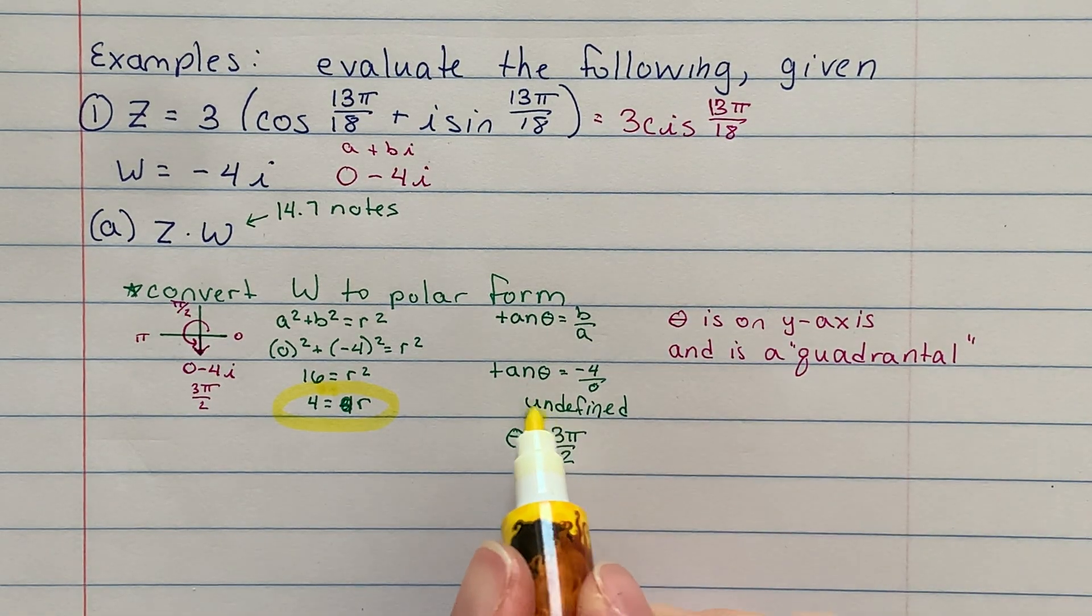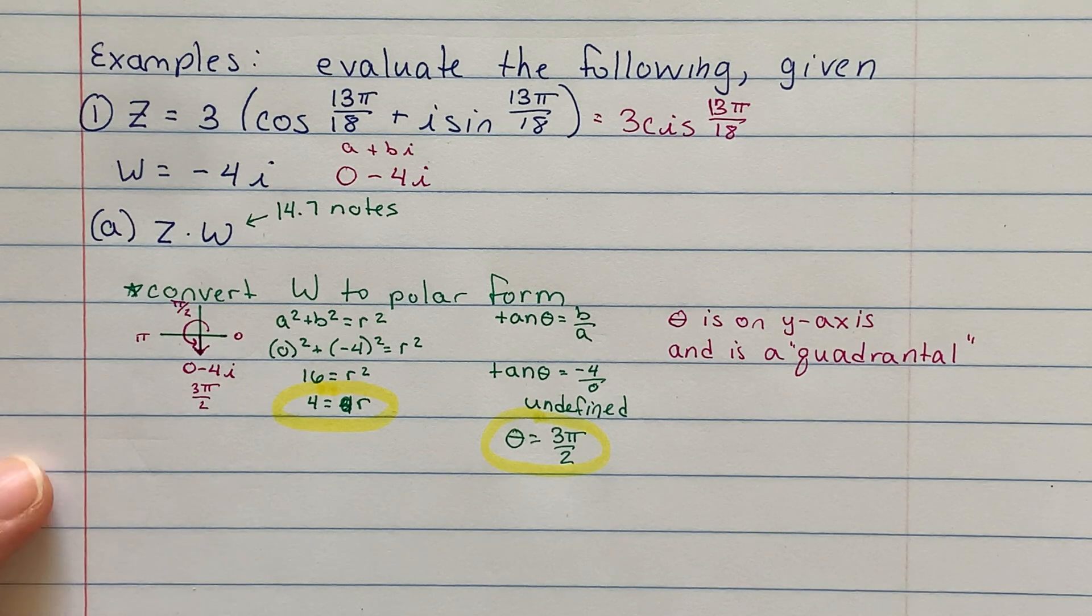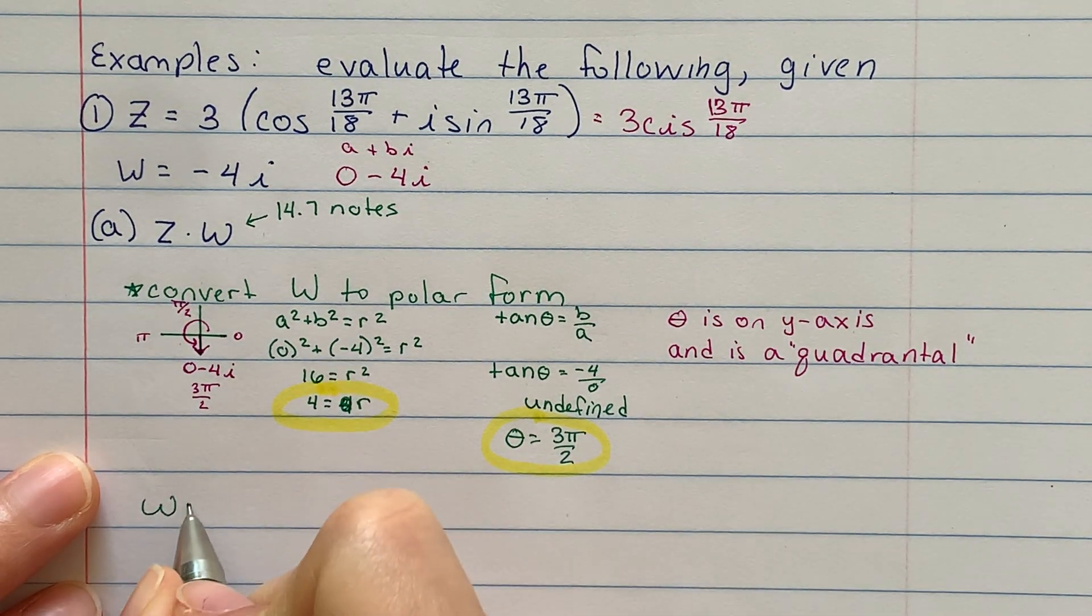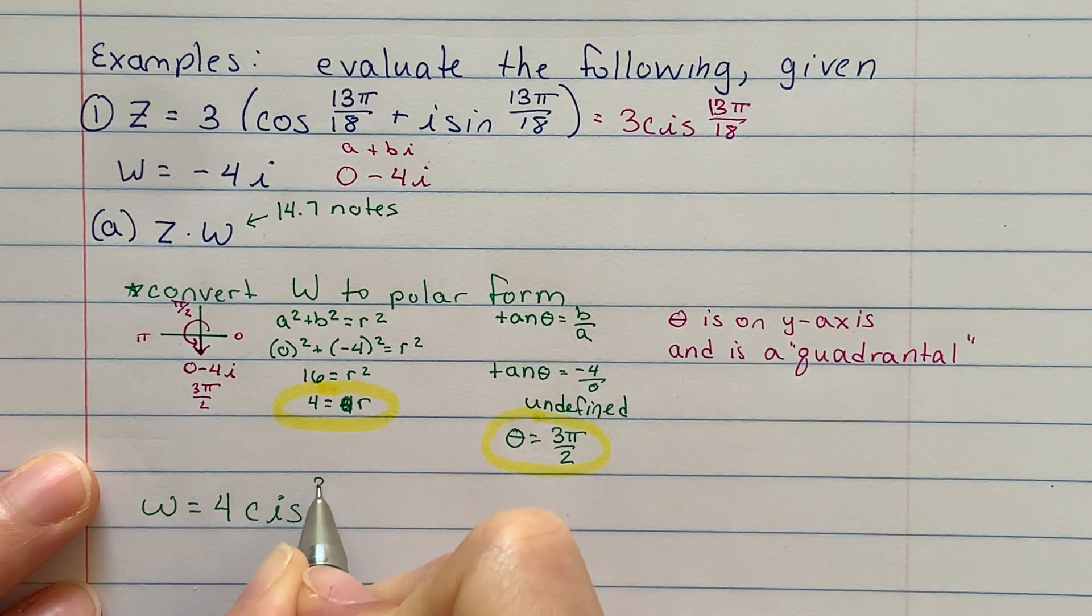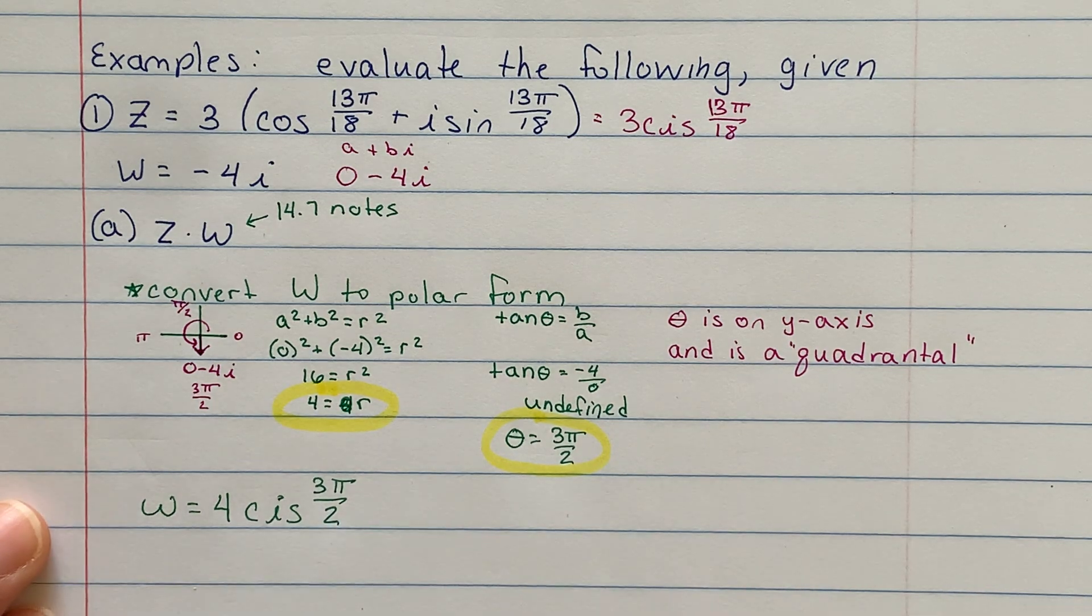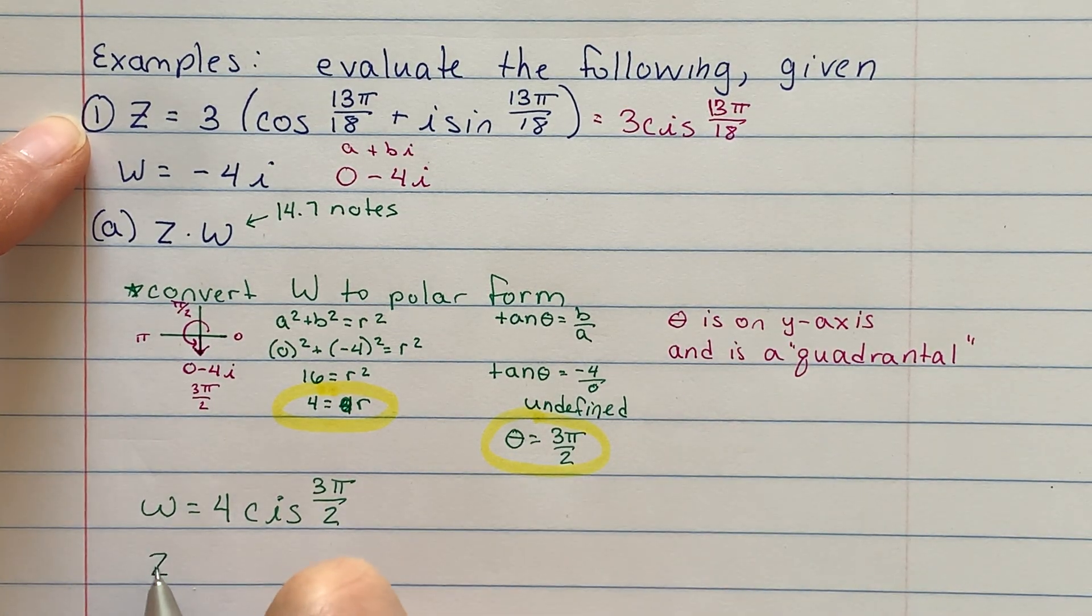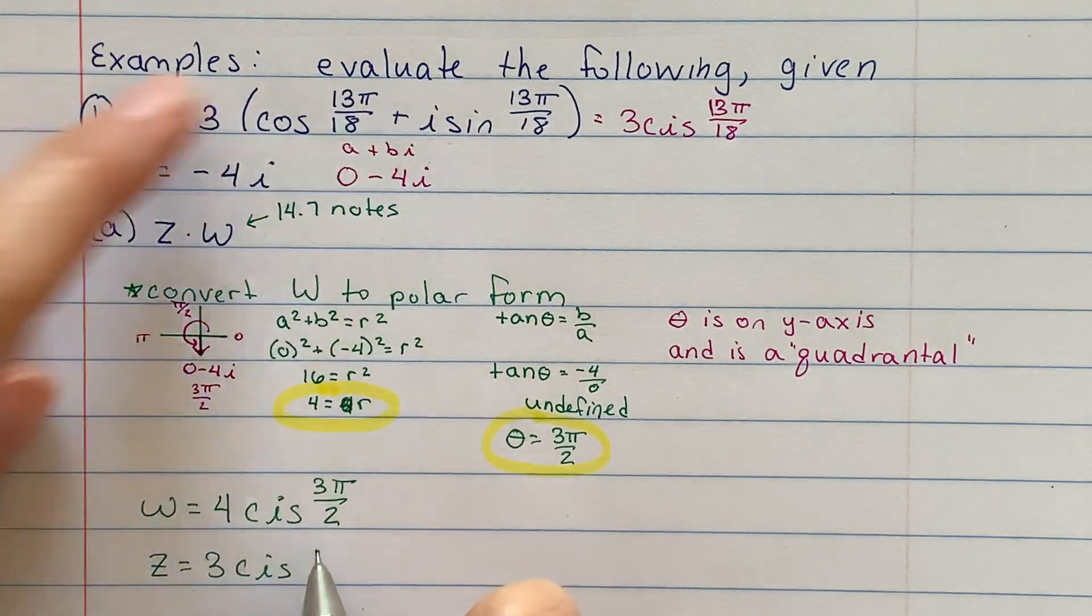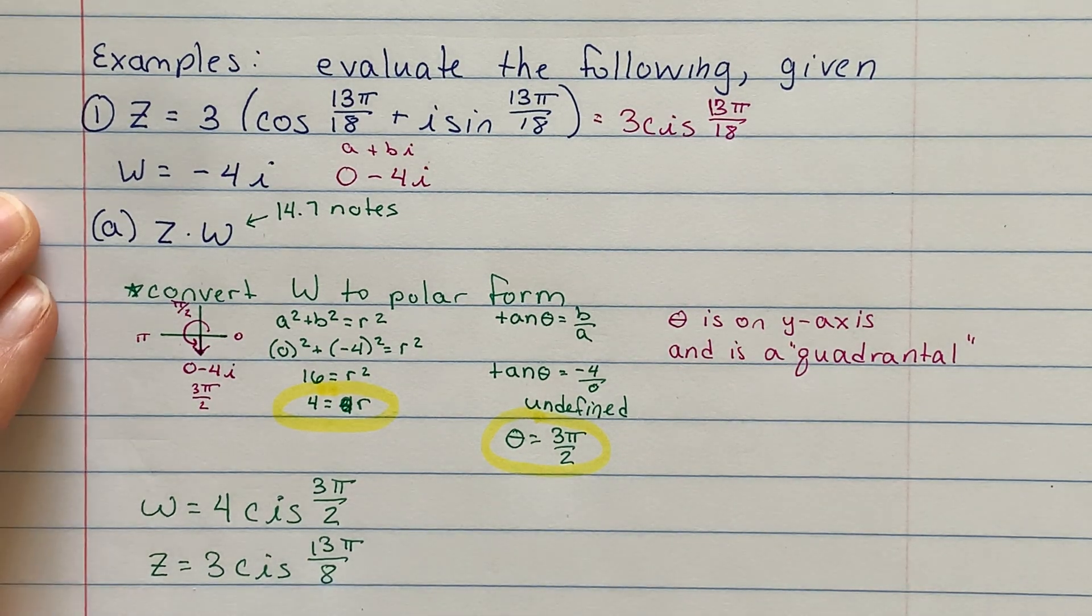And again, I went through that pretty quickly. So if you'd like to pause the video just to make sure you're caught up and understand what I did there, that would be a great idea. So what was the purpose of that? I needed to figure out what w is. w is 4 cis 3π over 2. And I know back up here that z is 3 cis 13π over 8. So I'm going to use those now to answer my part a.